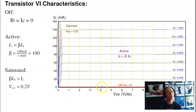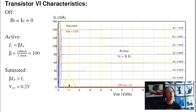So that's two of the states. Off region: if there's no base current, there's no collector current. Active region: the collector current is gain times the base current. And then there's a third region — the saturated region. If there just isn't enough voltage collector to emitter to maintain the current, I basically saturate. The exact voltage varies a lot, but we just say it's roughly 0.2 volts. The collector-to-emitter voltage tries to go to zero — you can't quite get to zero, so we'll call it about 0.2.